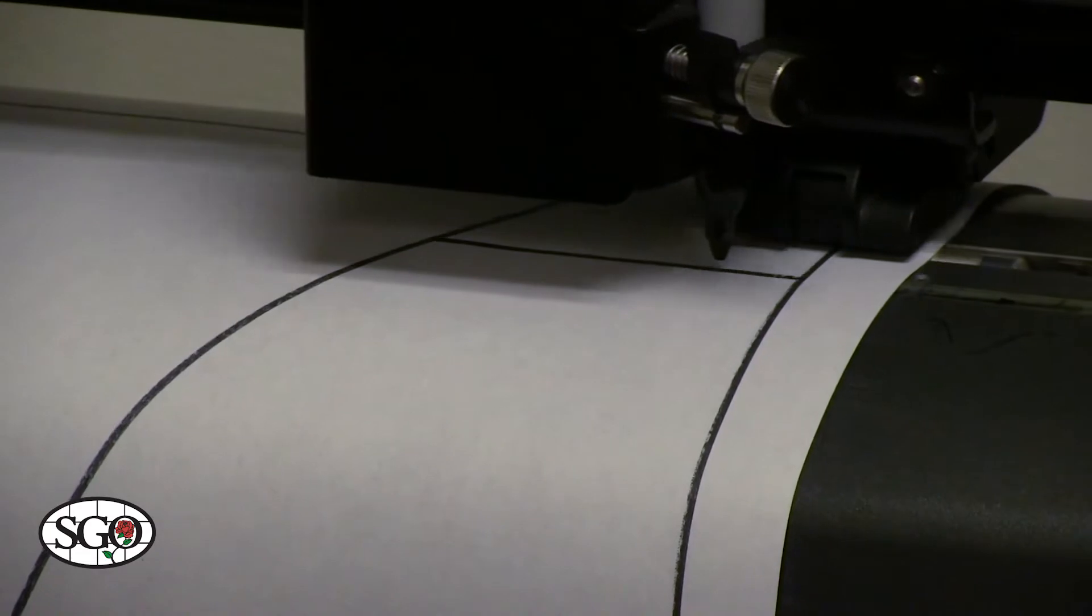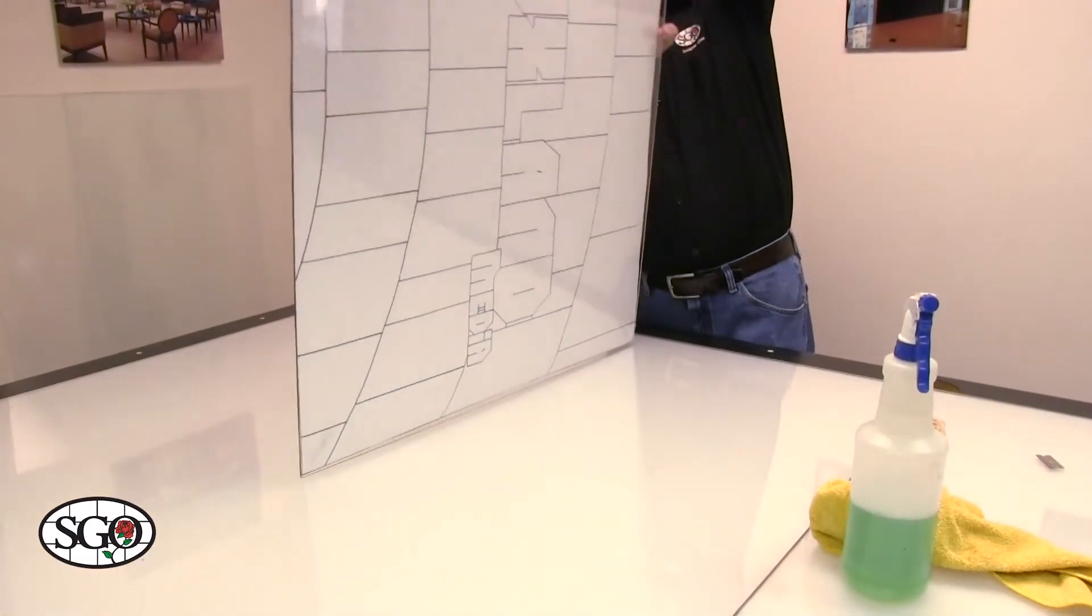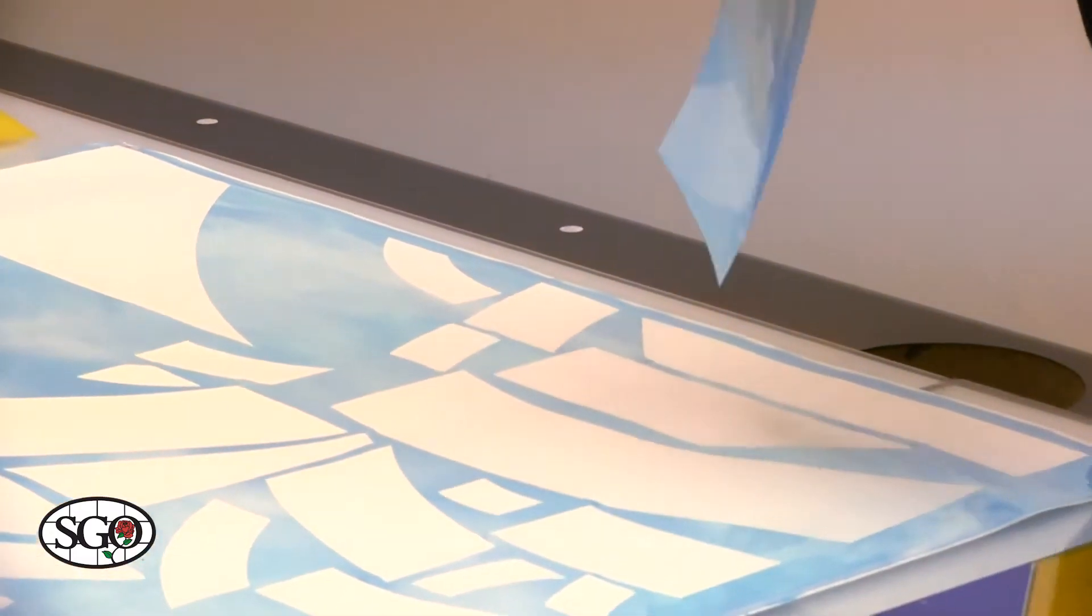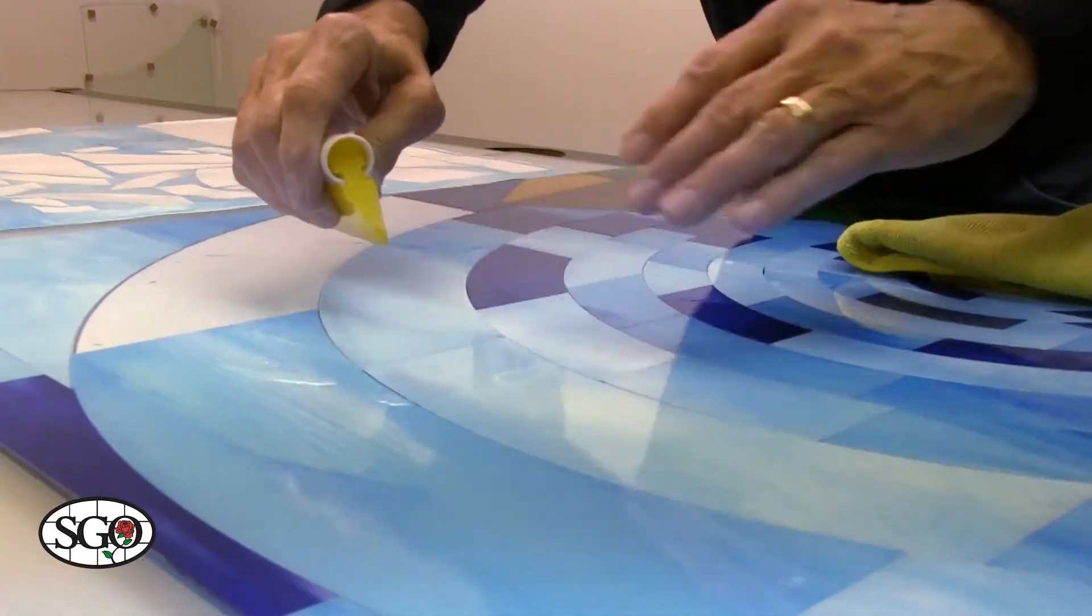We'll plot the pattern itself. Then we apply the pattern to the back of the glass. And then on the front of the glass, we just find where the pieces go and apply those.